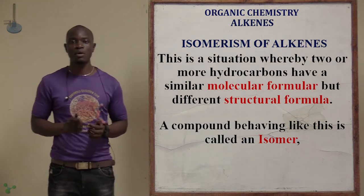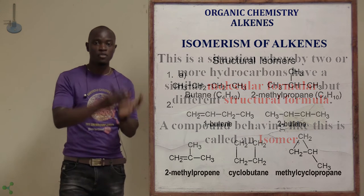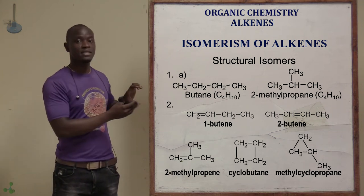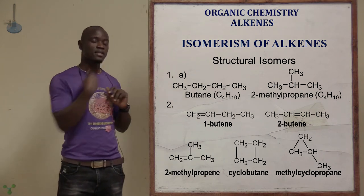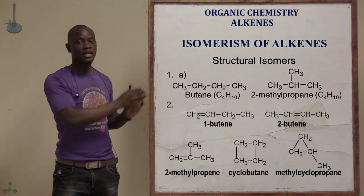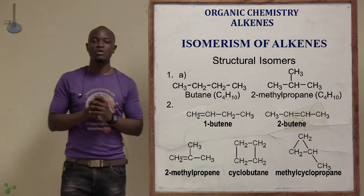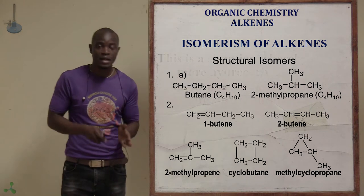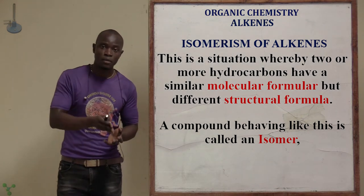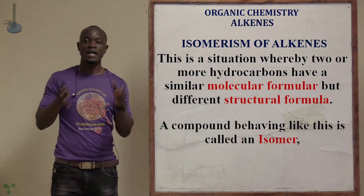Isomerism is the situation whereby two or more compounds in a hydrocarbon have the same molecular formula but different structural formula. One structure has four carbons and ten hydrogens, satisfying the molecular formula, while only the structural arrangement differs. Such compounds are referred to as isomers.